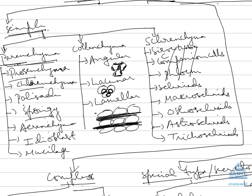Aerenchyma are generally found in hydrophytes and are useful in providing buoyancy and balance. Idioblasts are also found in plants. Lastly, mucilage cells secrete mucilage. Colenchyma are known as semi-mechanical tissues.